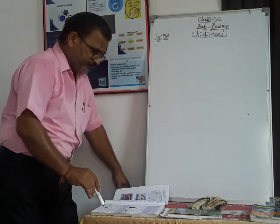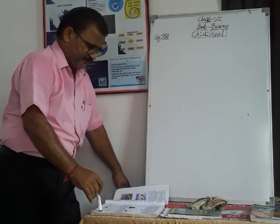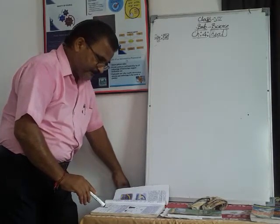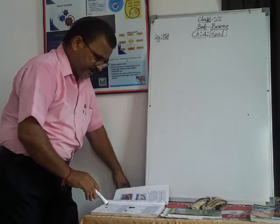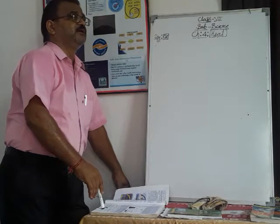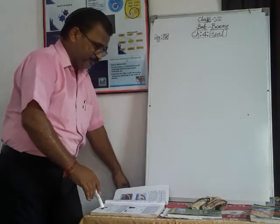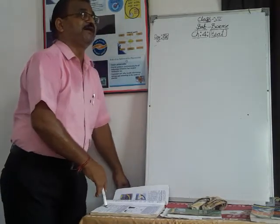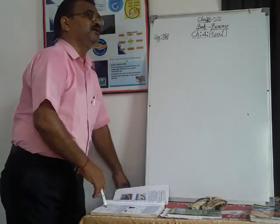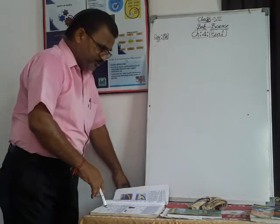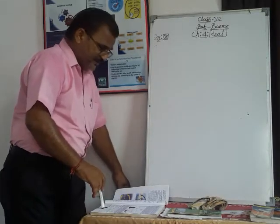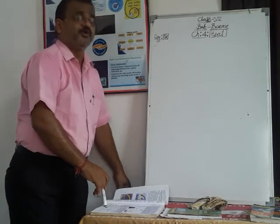Now listen to the uses of good and bad emitters of radiation. The metal surface of a tea pot is shiny so that tea is kept hot for a long time. Since the outer surface is shiny metal, heat radiation is reflected and the tea stays hot for a longer period of time.